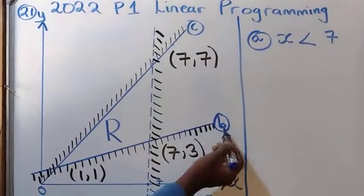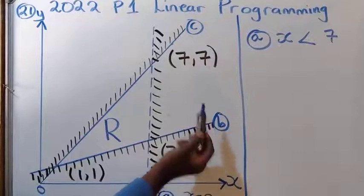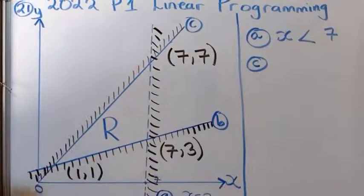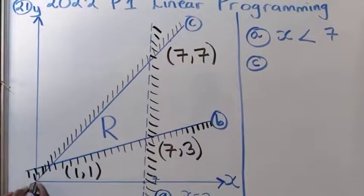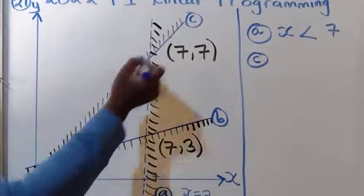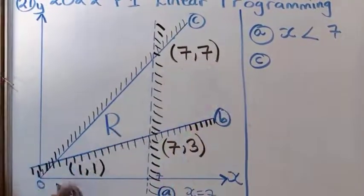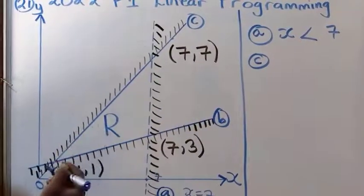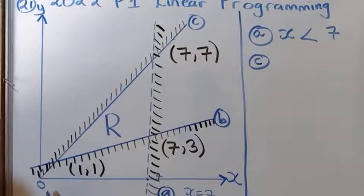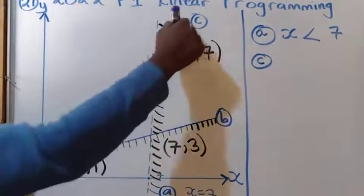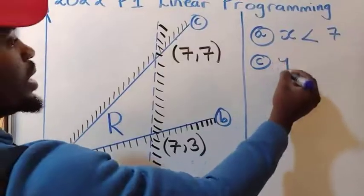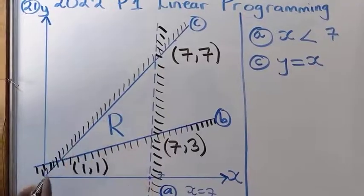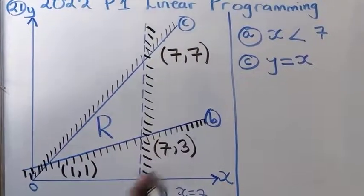Now we are remaining with lines B and C. Let's pick line C. This line C, when you look at it, it's passing through (0,0) and also passing through (7,7). To find its equation, you can use these two coordinates or you can recognise that on the Cartesian plane, a line passing through the origin like this is the line y equal to x. Now I have to present this as an inequality.